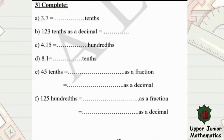Hello. 3.7 equals how many tenths? Let's write it as a fraction first. You have only one place after the point, so the denominator is 10, and write the 37 up. Now, how do you read this fraction? 37 tenths. Now, 123 tenths as a decimal equals what? The word 'tenth' means one place after the point.